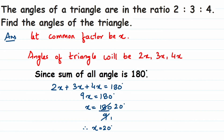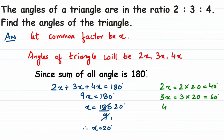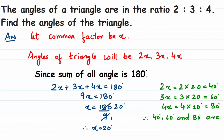But we have to find out the values of the angles — that is 2X, 3X, and 4X. Substituting X = 20: 2X = 40°, 3X = 60°, and 4X = 80°. So 40°, 60°, and 80° are the angles of the triangle. That's it — we got the solution!